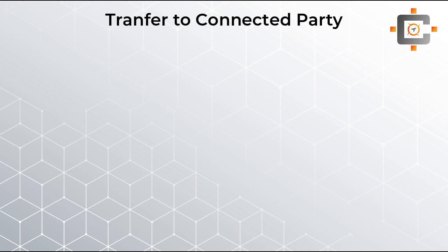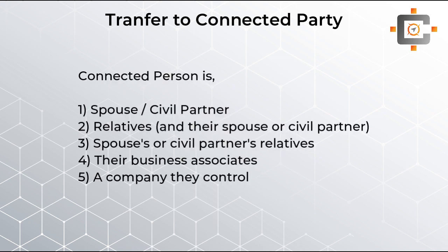Now the most important thing is which people are considered a connected person. The first one is the spouse, the second is relatives, the third is the spouse's relatives, the fourth is business associates, and the fifth is the company that they control. These are the persons considered as connected persons.